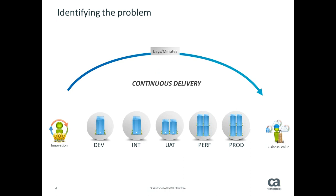What we're actually striving for is continuous delivery. The idea is to shrink deployments down to days and ultimately into minutes — but without bypassing anything. I'm still going to push a deployment to development, do testing there, push to integration, UAT, performance, production. I'm still going to do exactly what I know I need to do; it's just that we're going to speed it up by automating the processes. And by automating, the deployment will be pushed out in a standard way, and I can be confident that when it takes place it's been done successfully.